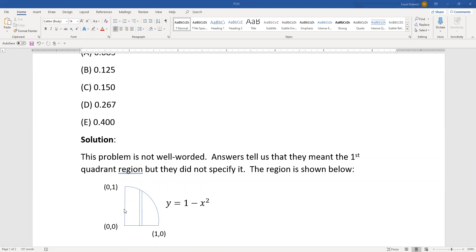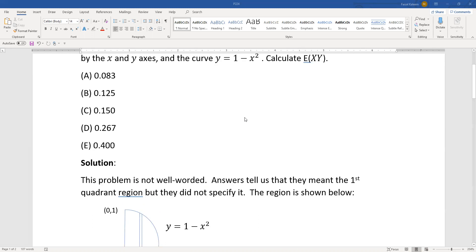But if we were in the second quadrant, then E of xy would be negative because in the second quadrant the x's will be negative and y's will be positive, and so you expect the product to be negative.